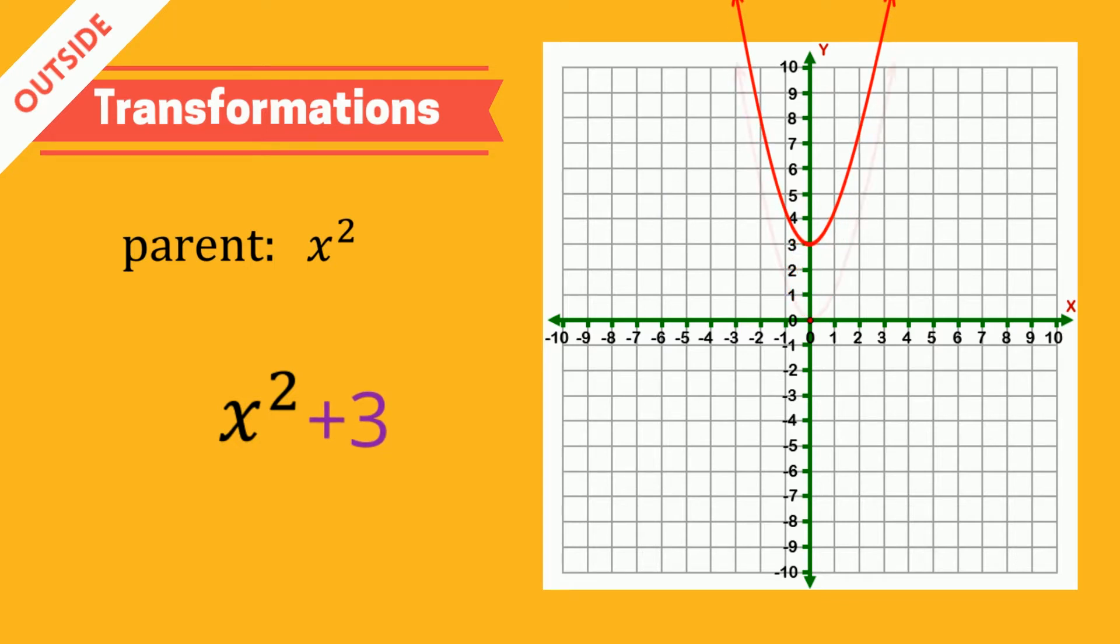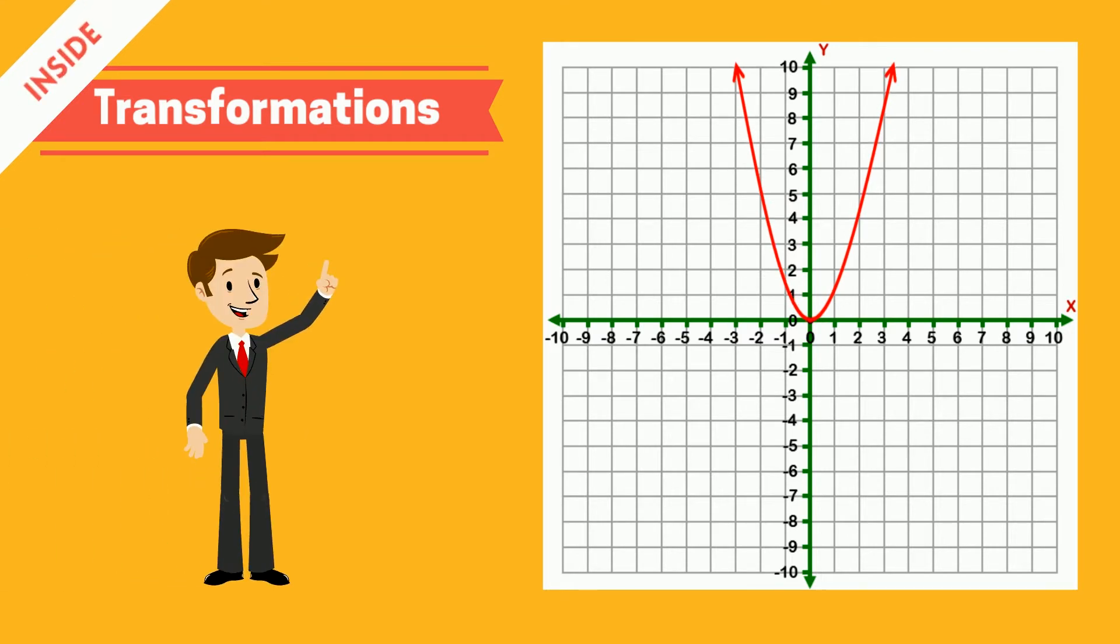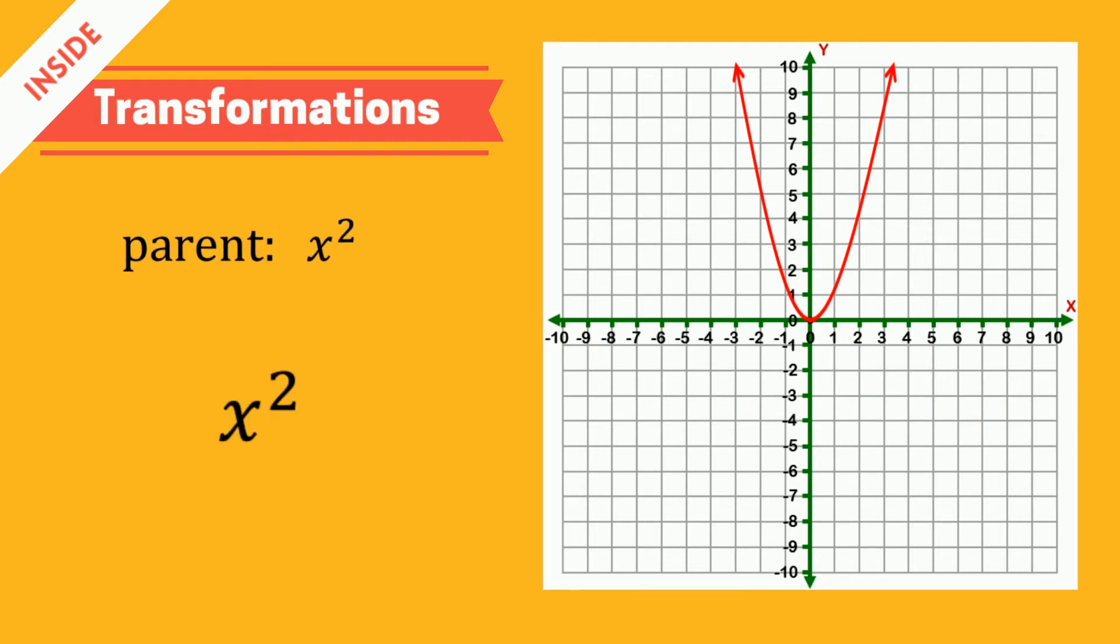But now comes the interesting part. The inside transformations seem to work in the opposite way you would expect. They affect the x values, so we see the result in the horizontal direction, but watch closer. Multiply the inside by 5, and it will shrink or compress the function by 5. Add 3 to the inside, and it will move to the left 3 units.